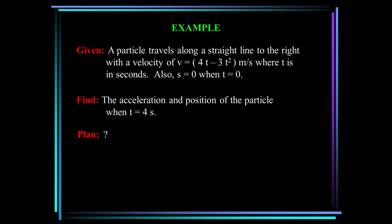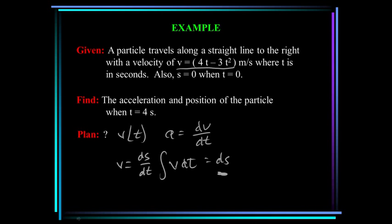Let's look at an example. A particle travels along a straight line with a velocity defined by v = 4t - 3t². Find the acceleration and position of the particle when time equals four seconds. What's our plan? We have v as a function of time. We know that acceleration is dv/dt, so we can differentiate the velocity to get the acceleration. To get the position, we know that velocity is ds/dt, so v·dt equals ds. We can integrate this to get the position.